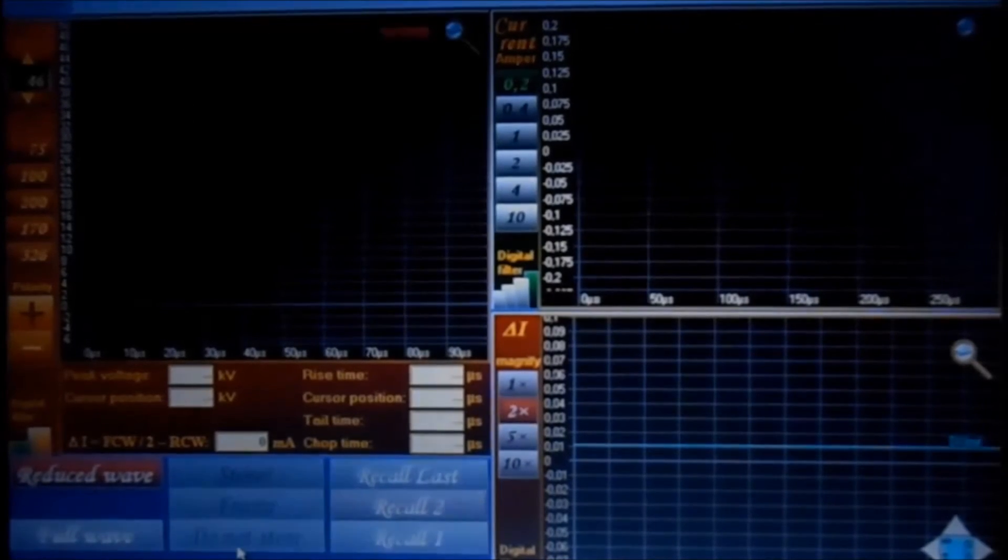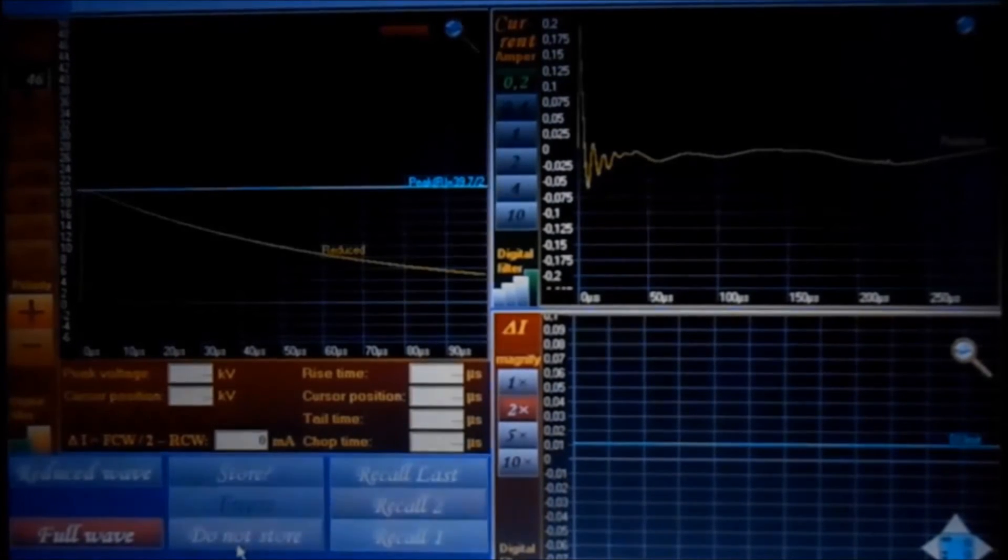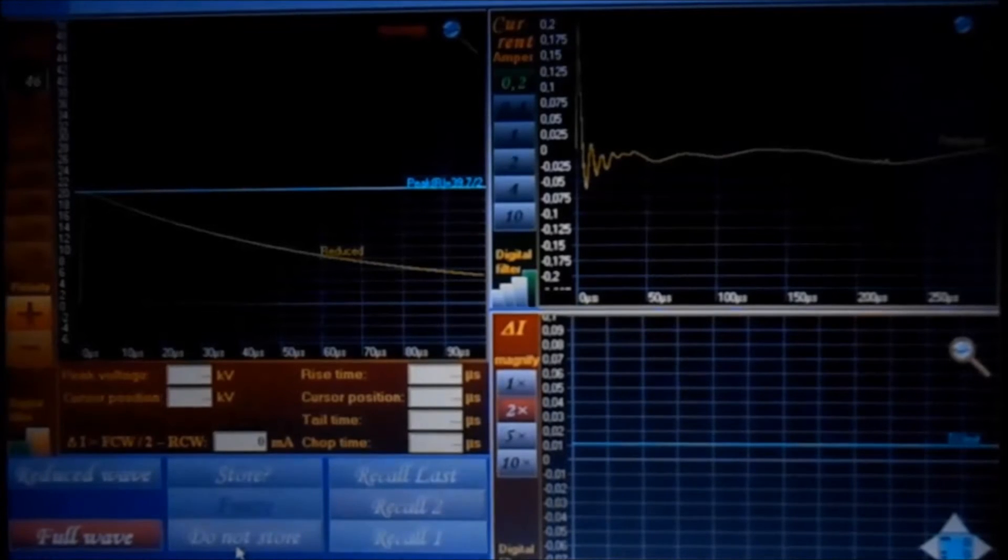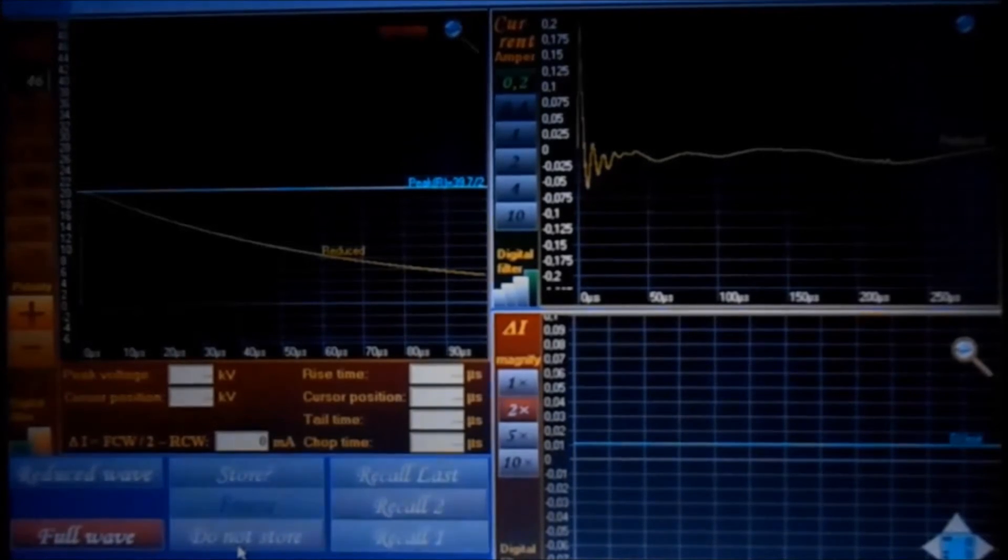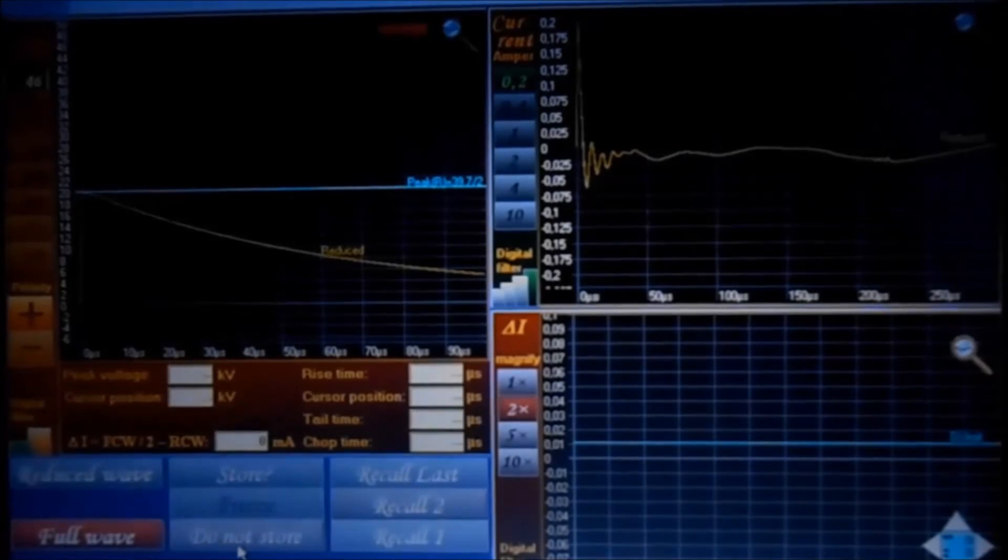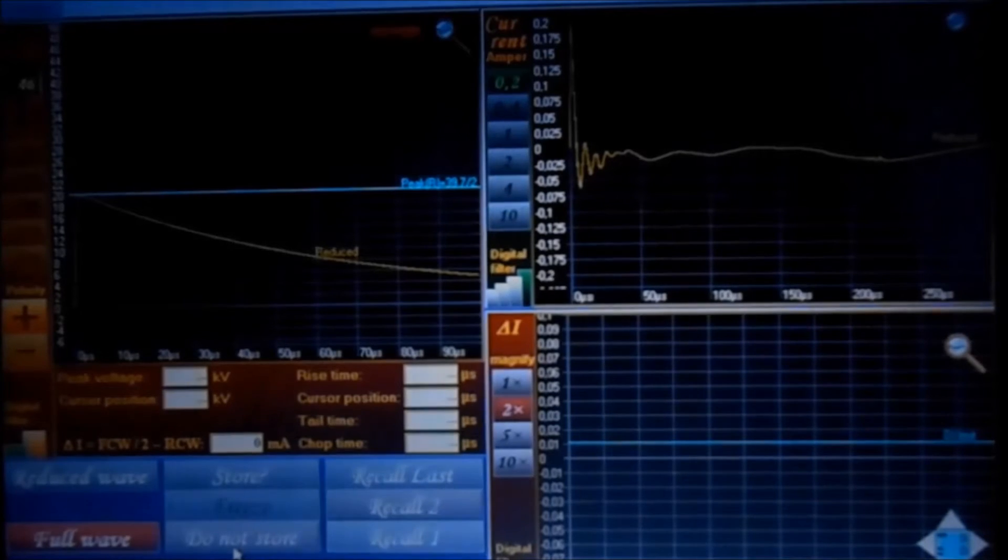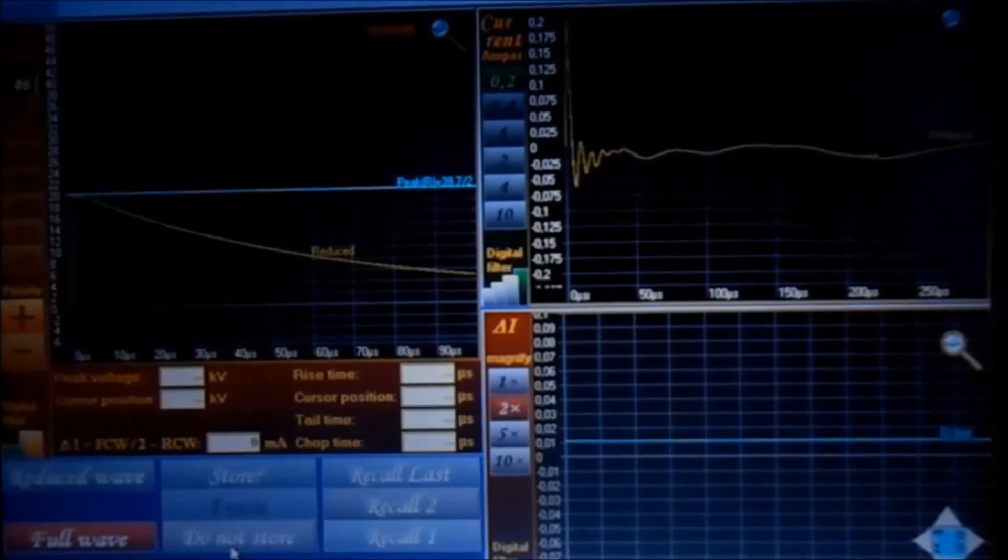The reduced voltage and current waveform shows up on a digital recorder. This recorder has a 14-bit resolution and 100 mega sample per second speed. It will read the reduced voltage and the reduced current.